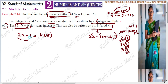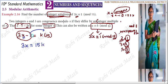We have to solve for x. With 3x on this side, I will shift minus 1 to the other side. Minus 1 when shifted changes its sign to plus 1. So 15k plus 1 when it comes to this side gives us x equals 15k plus 1 divided by 3.